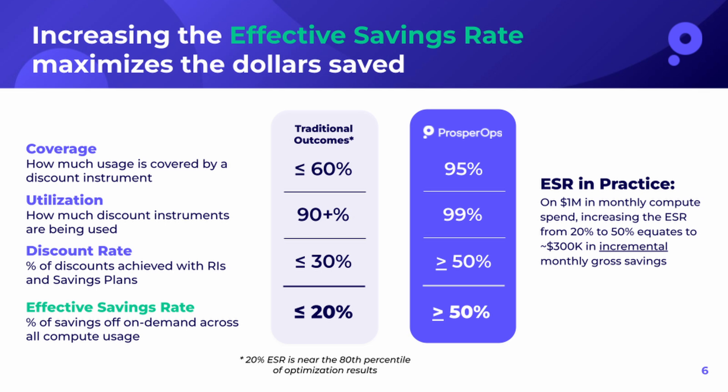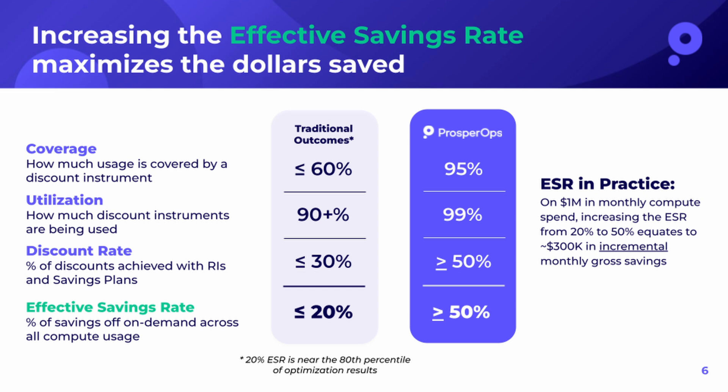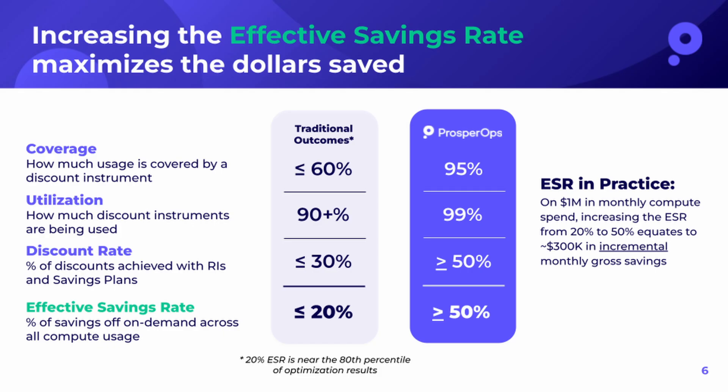You're probably familiar with key metrics like coverage, utilization, or discount rates. These are not unimportant, but they don't tell you the whole picture and they don't tell you the actual savings outcome. Effective savings rate is a key business measure that assesses how effective you are with your rate optimization strategy so that you can get the best returns. It's almost like a return on investment in a financial context, and that is why at ProsperOps we are laser focused on your ESR.